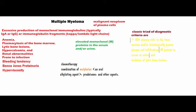Plasma cells secrete immunoglobulins, which are important for fighting and defending against infection. Generally, polyclonal immunoglobulins are secreted by plasma cells, but in this type of disorder, monoclonal antibodies are formed. Normally, two light chains and two heavy chains are required in an immunoglobulin, but in myeloma, a single light chain is able to form immunoglobulin or immunoglobulin fragments, such as kappa or lambda fragments.